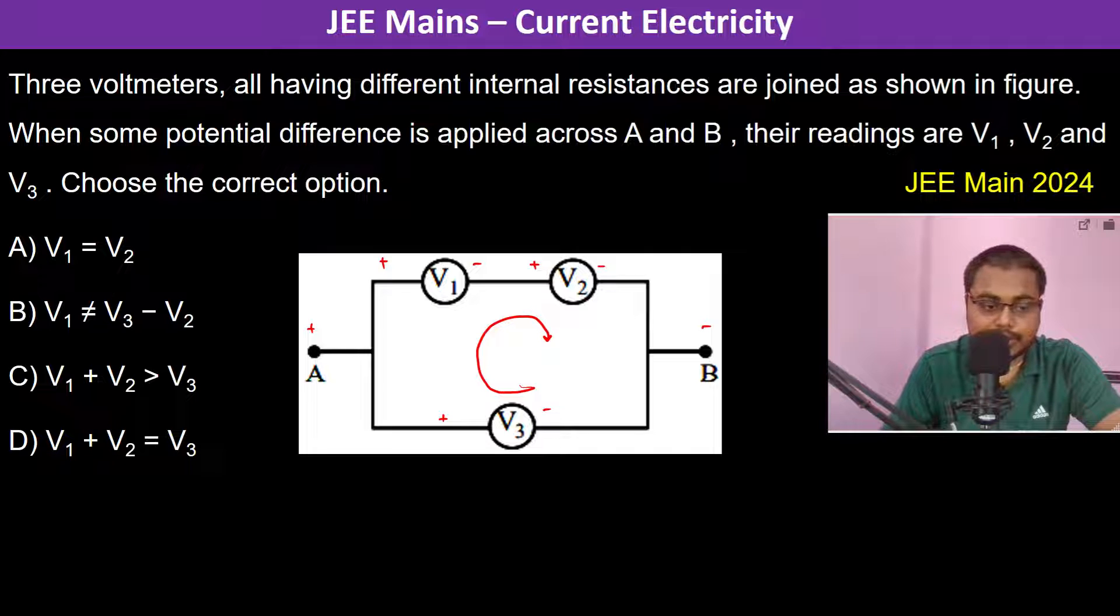To be very clear, voltmeter and ammeter both have positive and negative terminals, so they should be connected with positive and negative terminals respectively. But galvanometer has no terminals, so you need not be bothered.